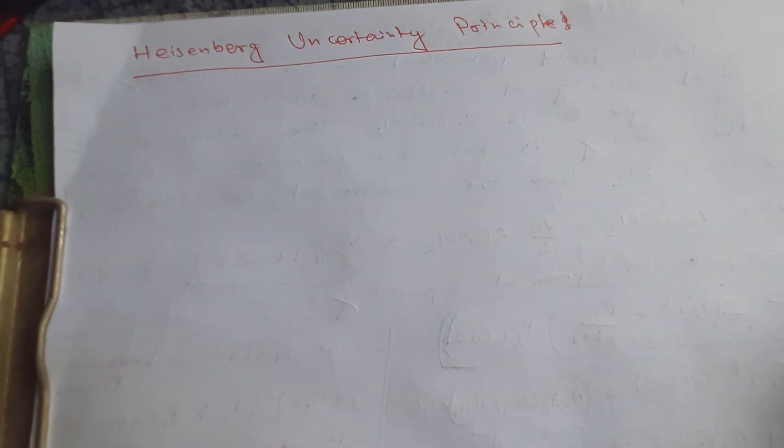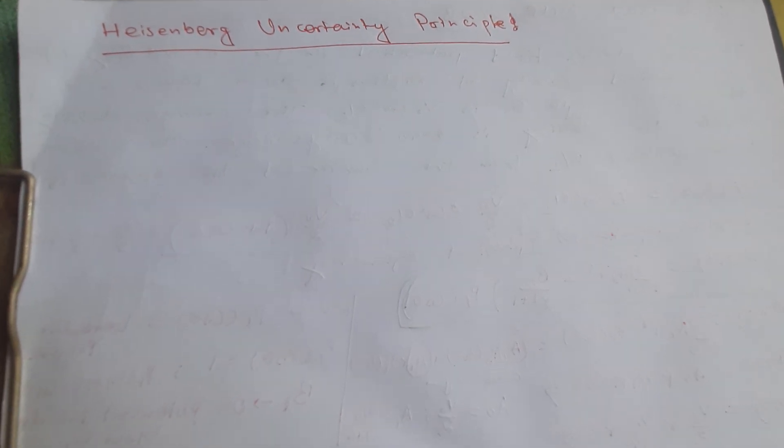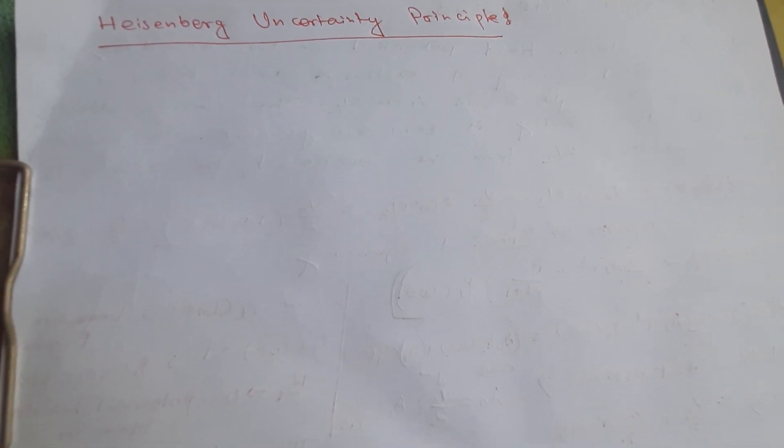Hello students. In this video we are going to talk about the Heisenberg uncertainty principle. In the double slit experiment we have seen that we cannot detect an electron which was passing through the slit without disturbing its state. So we cannot detect an electron without disturbing its state.